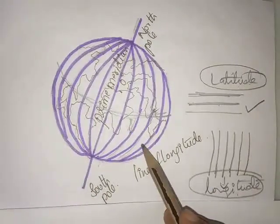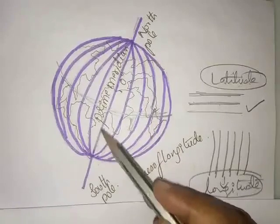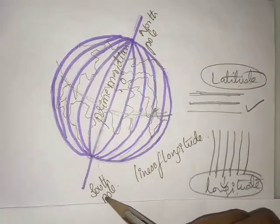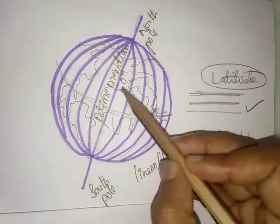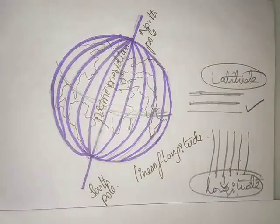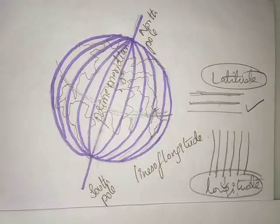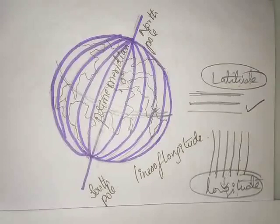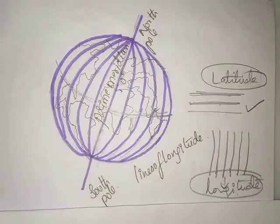These lines are also known as meridians or longitudes. The line of longitude that passes through Greenwich, near London, is called the prime meridian, and it is marked as zero degrees. The prime meridian divides the earth into two halves, just as the equator divides the earth into two halves.